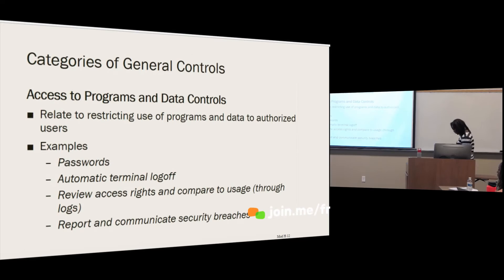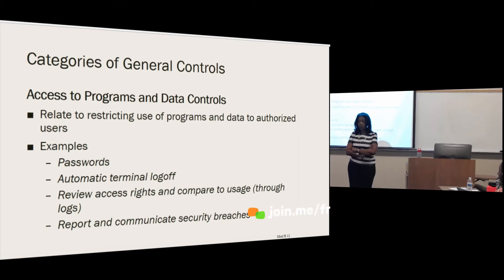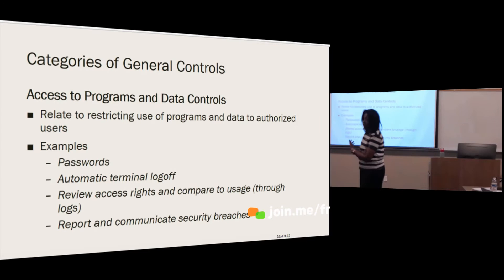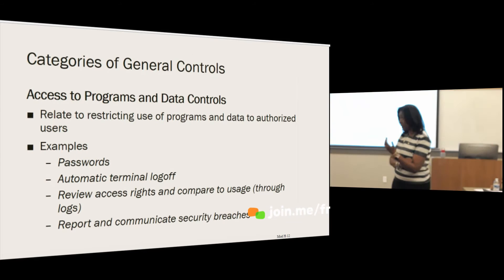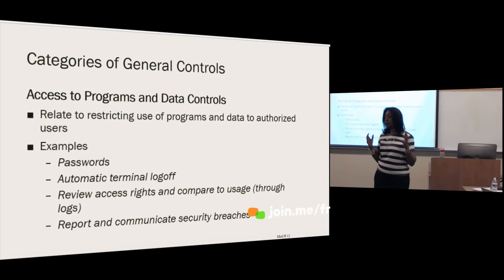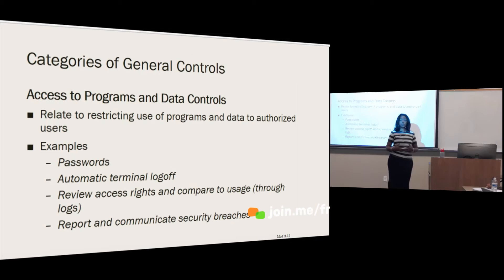Additional general controls include access to programs and data controls — you want to restrict access to authorized users. One way we do that is through passwords. Some companies require password changes every 90 days. In the financial services sector, people use physical tokens that plug into the computer and generate a constantly updated password, so the password changes daily and can't be easily guessed.